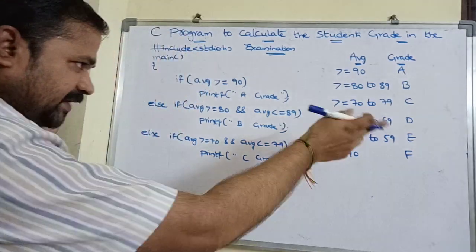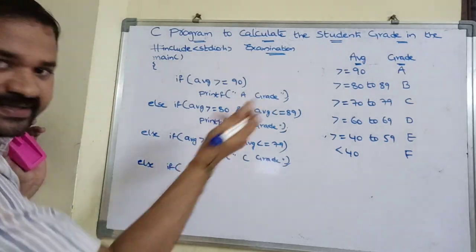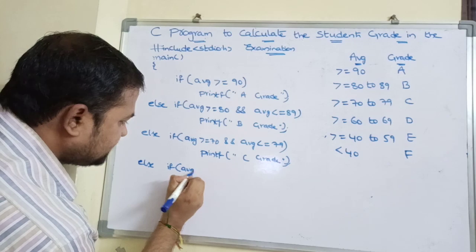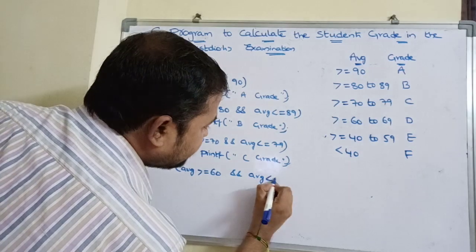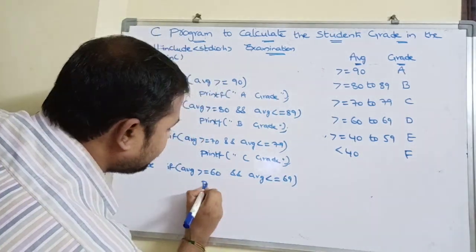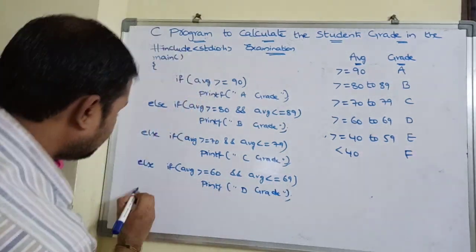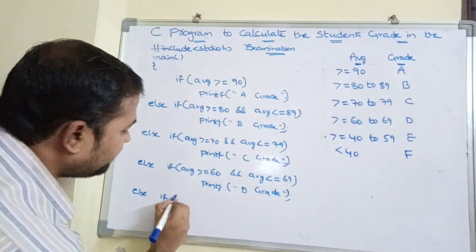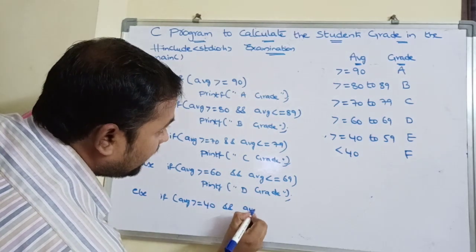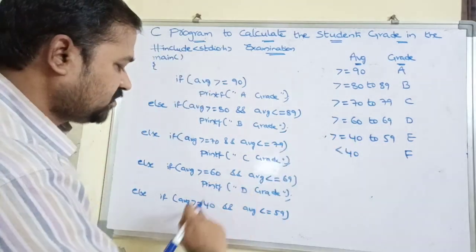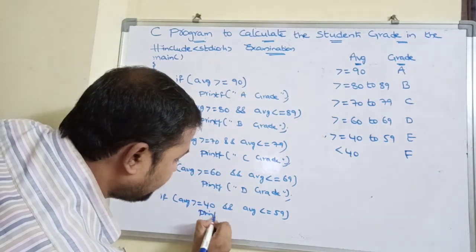Next condition: else if the average is greater than or equal to 60 AND less than or equal to 69, then print grade D. Then else if the average is greater than or equal to 40 AND less than or equal to 59, then print grade E.